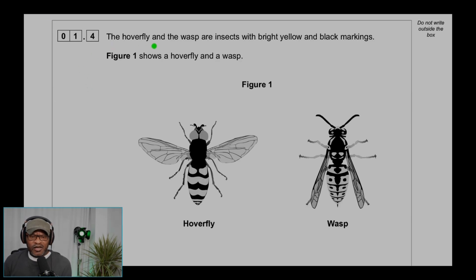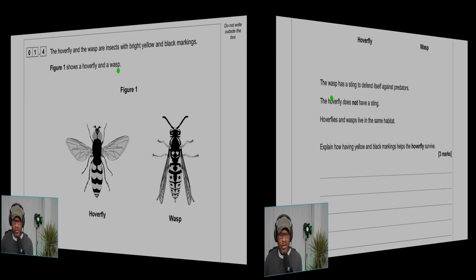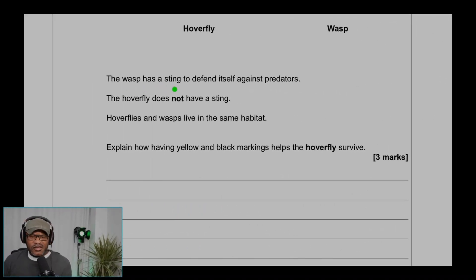Question 1.4: The hoverfly and the wasp are insects with bright yellow and black markings. Figure 1 shows a hoverfly and a wasp. The wasp has a sting to defend itself against predators. The hoverfly does not have a sting.